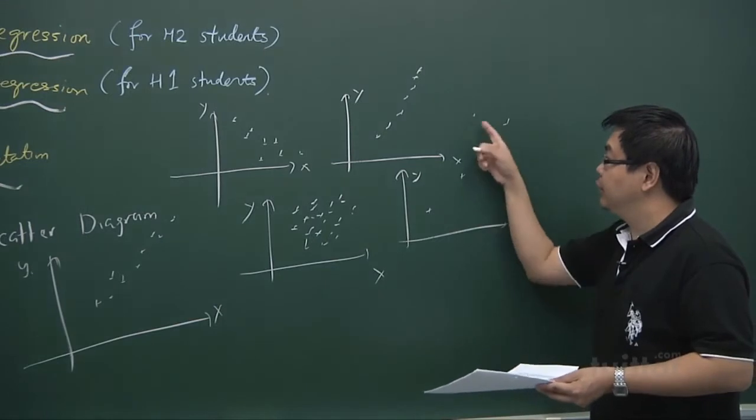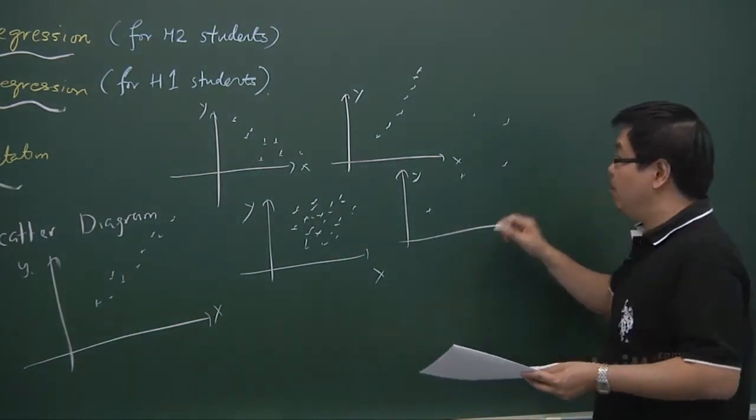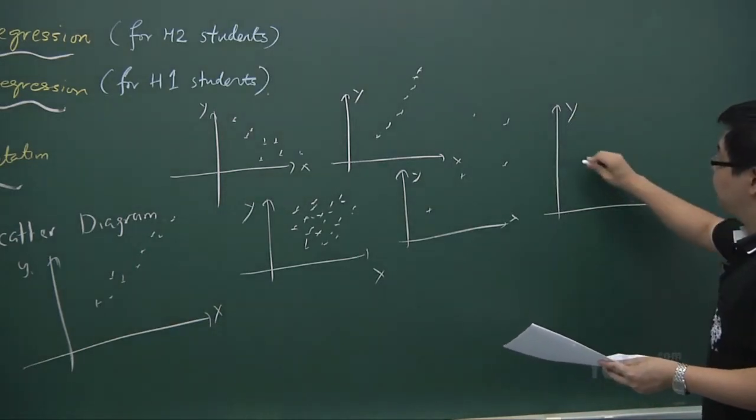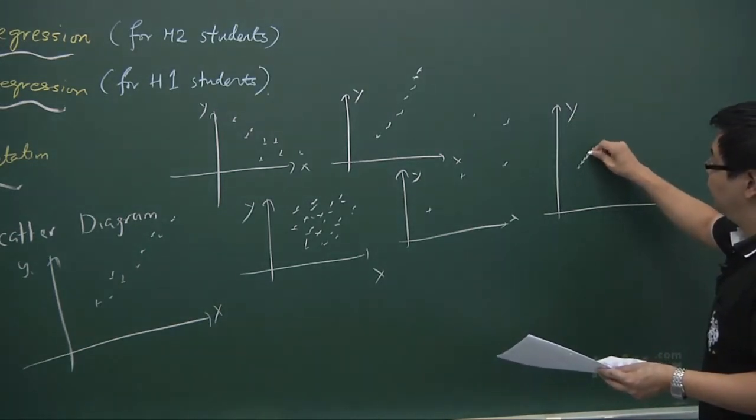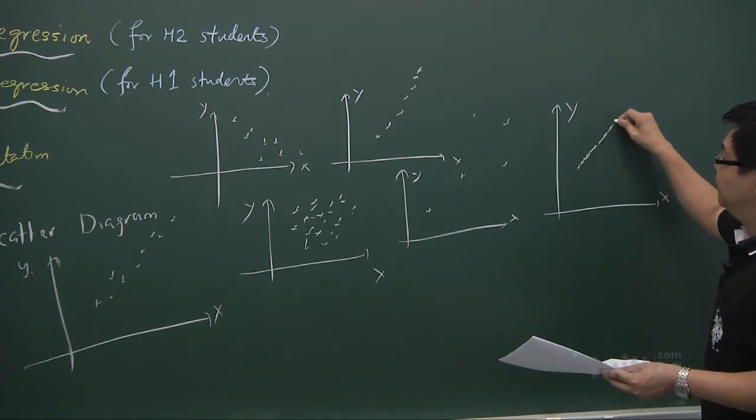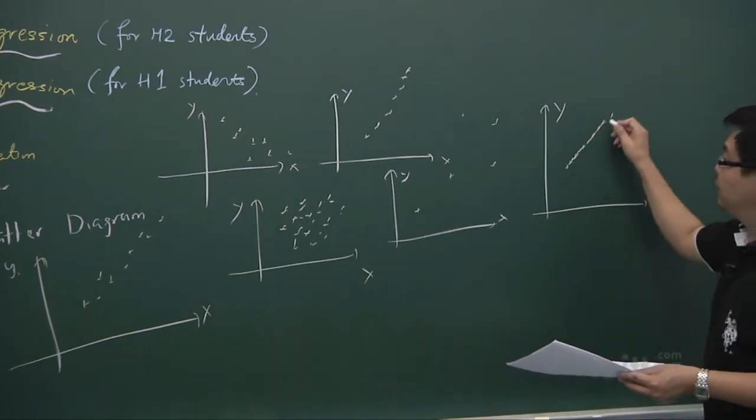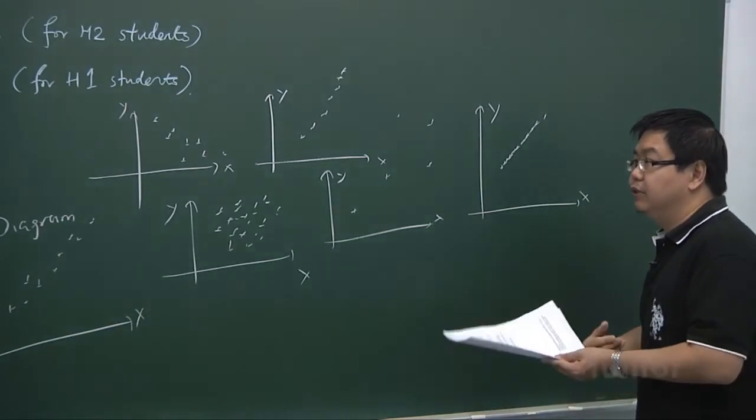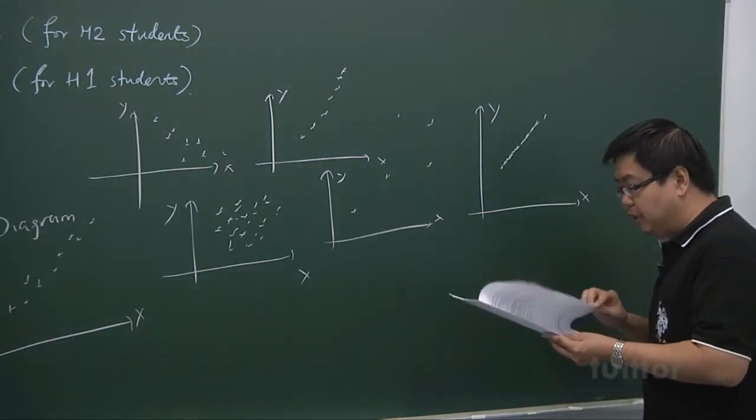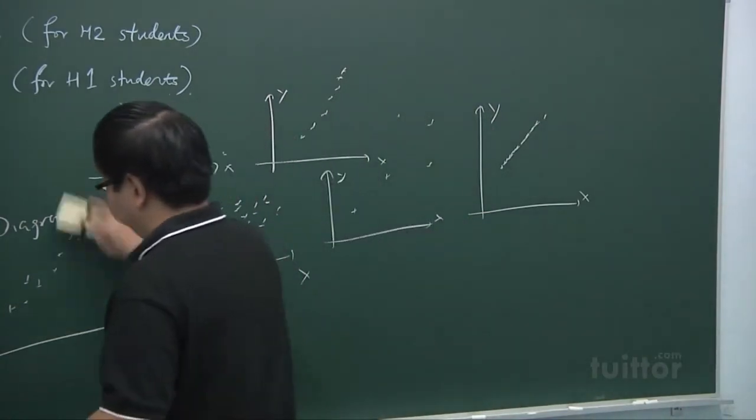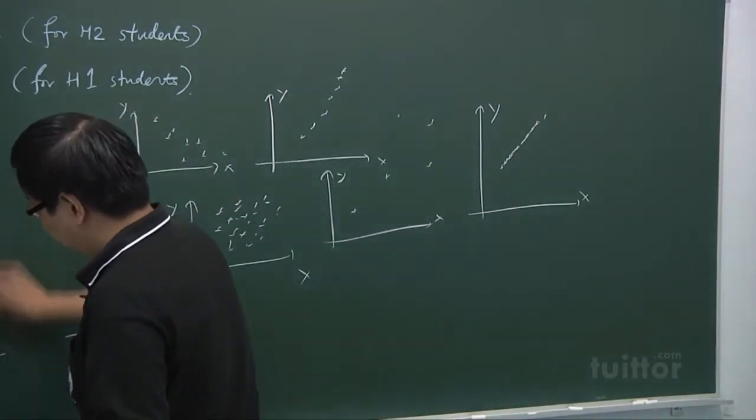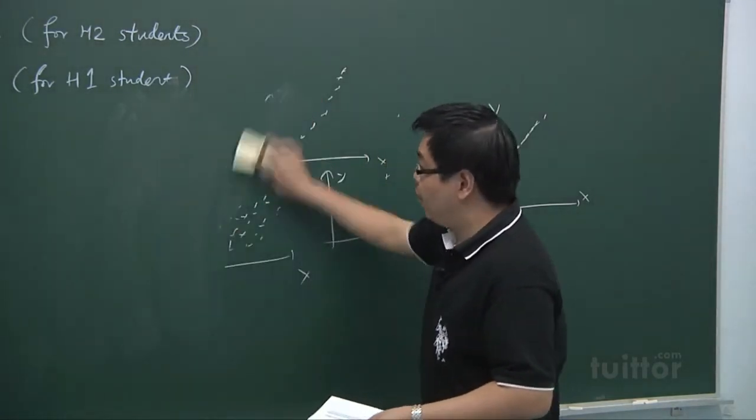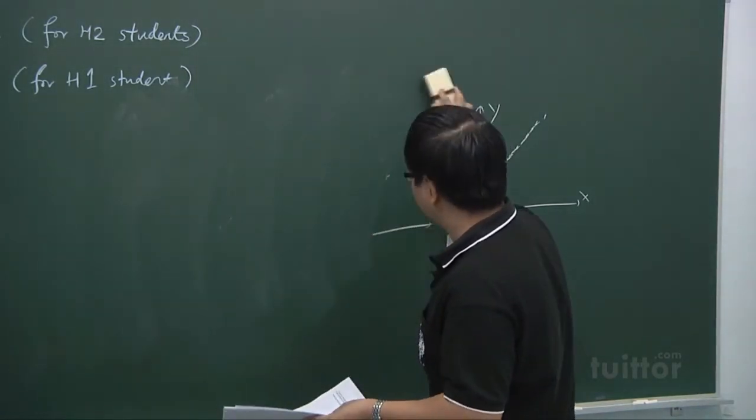I would say that this relationship is not very strong compared to a situation where the points are all very close together. And this tells you that the relationship is going to be a very strong one. So let me just give you some suitable examples of scatter diagram here. And these examples are common ones that you tend to see.